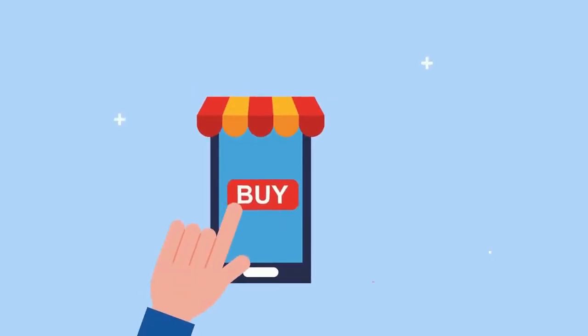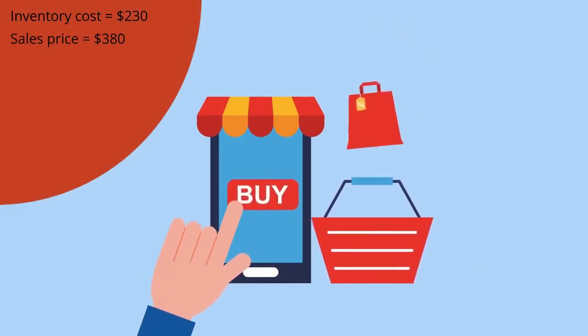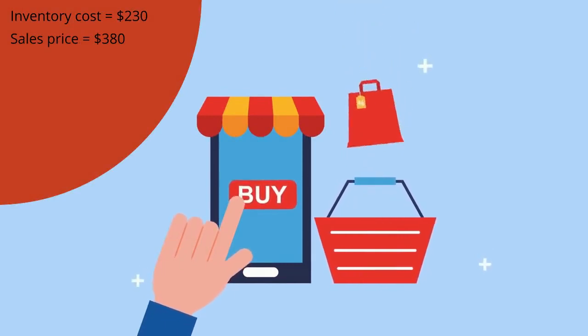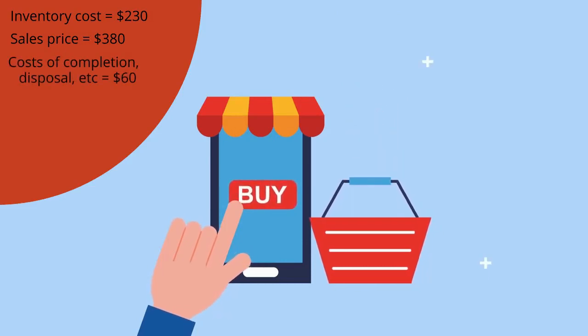Assume you originally purchased inventory for $230 each. You sell the inventory for $380 each. Cost to sell, dispose of, and/or transport the inventory equals $60. The net realizable value is $320. Which is lower — cost or net realizable value? Cost is lower at $230. This is the amount we currently have our inventory recorded for and the amount we would report.